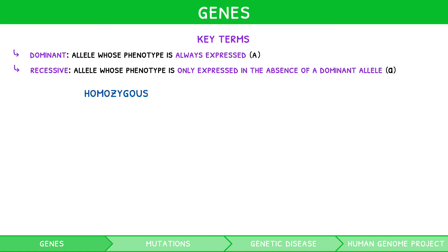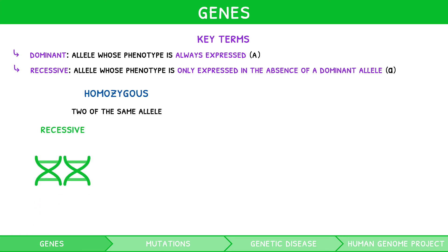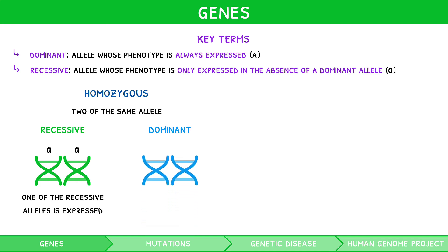Homozygous: a genotype containing two of the same allele. They can either be homozygous recessive, which indicates two identical recessive alleles, i.e., lowercase a, lowercase a — note, only one of the recessive alleles is expressed in the phenotype, chosen at random. Or homozygous dominant, which indicates two identical dominant alleles, i.e., uppercase A, uppercase A — note, only one of the dominant alleles is expressed in the phenotype, again chosen at random.